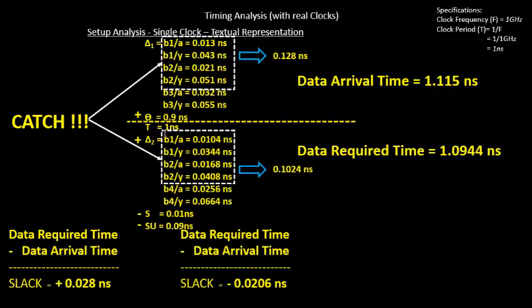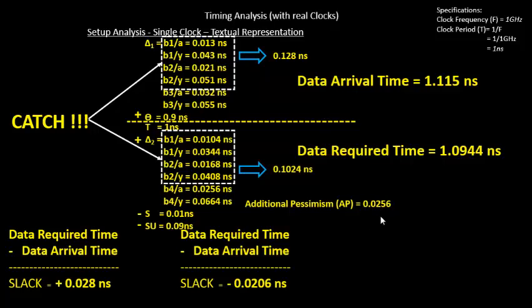Since this block can't have two different delays at the same time instant t, there is an additional delay added in the data arrival time. That extra amount is 128 minus 102.4 picoseconds, which comes to 25.6 picoseconds. So 25.6 ps got additionally added in the data arrival time, or equivalently, 25.6 ps got removed from the data required time.